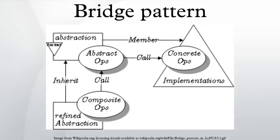Structure: Abstraction — defines the abstract interface and maintains the implementer reference. Refined Abstraction — extends the interface defined by abstraction. Implementer — defines the interface for implementation classes. Concrete Implementer — implements the implementer interface.